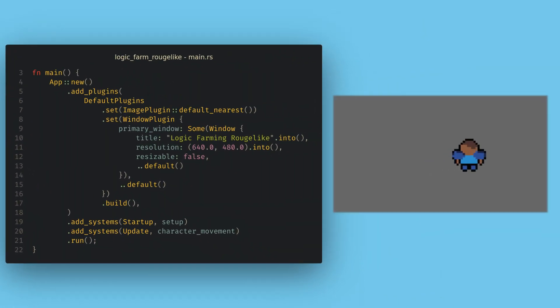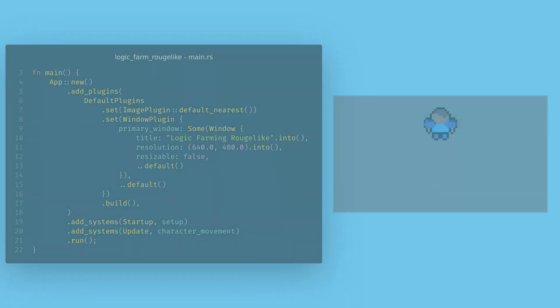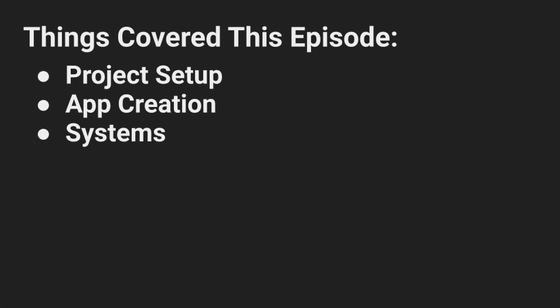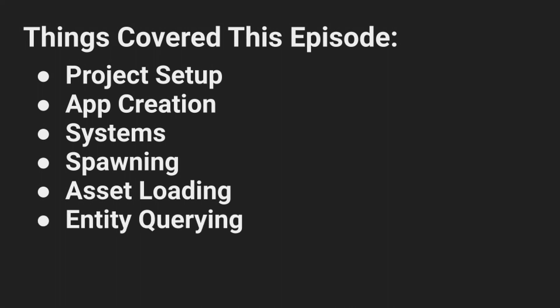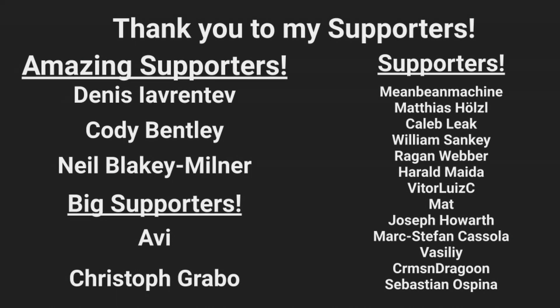Now when we use `cargo run`, we can move our character around on screen. That was a lot to take in, but we learned a ton of the basic features of Bevy in this video: how to set up a project, create an app, add systems to that app, spawn entities and customize their data, how to load assets, the basics of querying for entities and mutating their data each frame, and how to get user input. I hope you enjoyed this video and you're still excited to learn Bevy. Things will speed up as we learn more concepts, but it's important to get a strong foundation in these first few videos. Thank you so much to my wonderful Patreons, and thank you for watching.